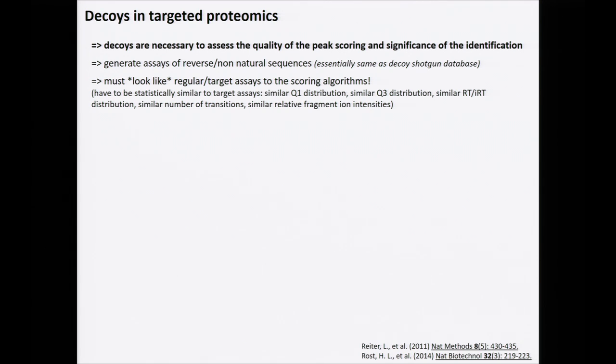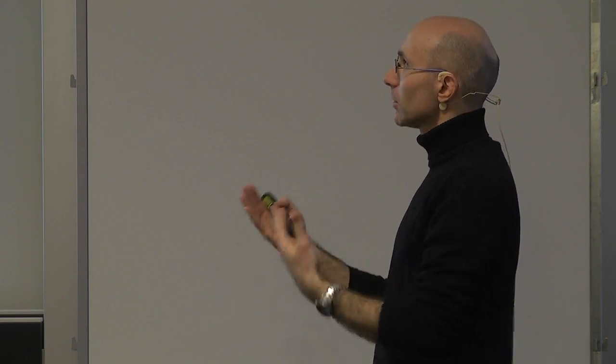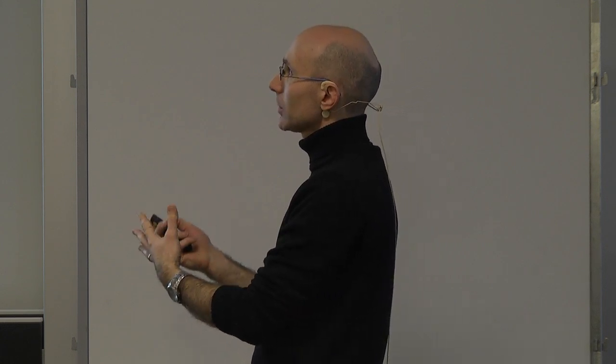Decoys must look like targets so the scoring algorithm is completely agnostic — it should not know if it's scoring a target or a decoy. Decoys must have similar Q1 distribution as targets, similar Q3 distributions for fragments, similar retention time windows. If all your peptides elute between 10 and 20 minutes, don't measure your decoys at 40 to 50 minutes — you want to capture sample complexity in the same mass and retention time dimensions. Use a similar number of transitions, similar relative fragment intensities, so nothing is biased.